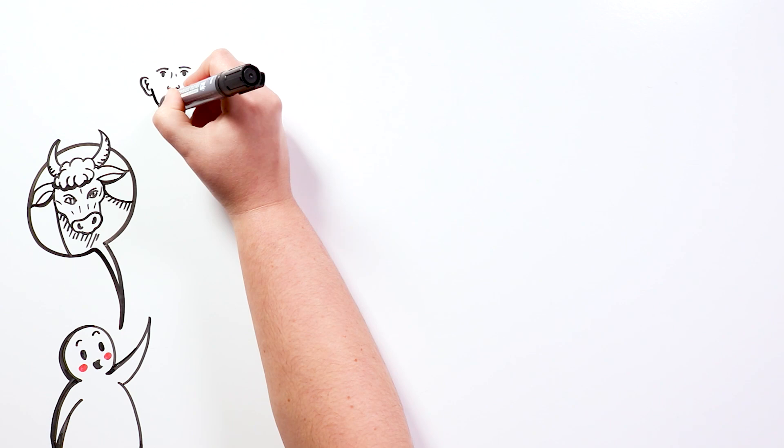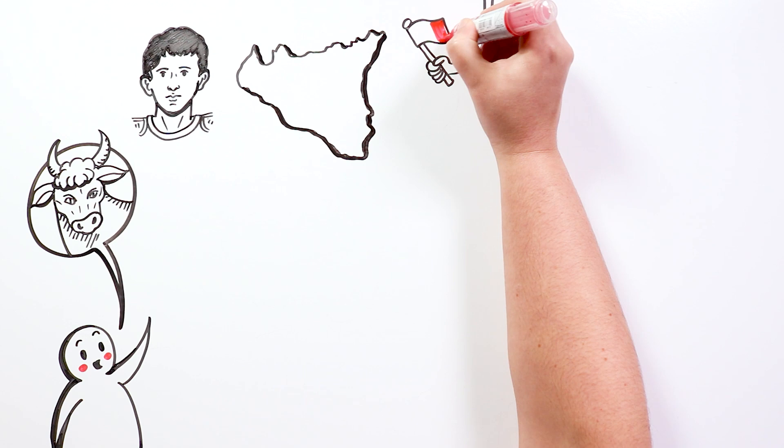It was an instrument of torture whose name is attributed to Phalaris, tyrant of Akragas, present-day Agrigento, Sicily.